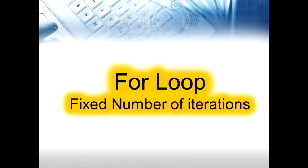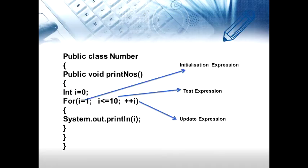For loop — fixed number of iterations. The following example program illustrates the use of the for statement. Public class Number, public void printNumbers, int i = 0. For i = 1; i is less than or equal to 10; i++. Here, i = 1 is the initialization expression, i <= 10 is the test expression, and ++i is the update expression.